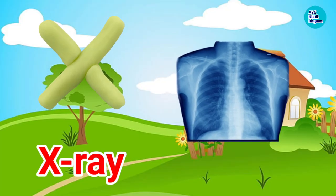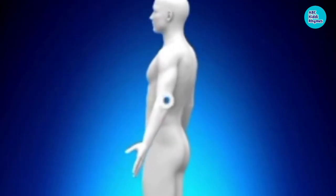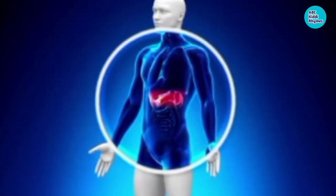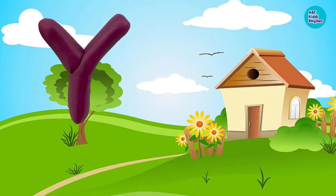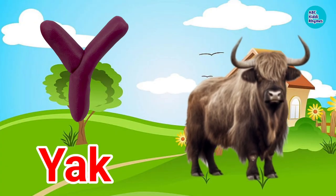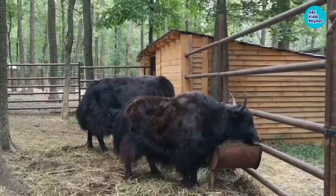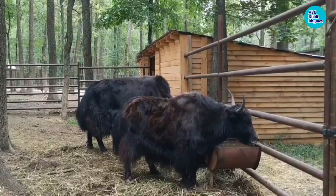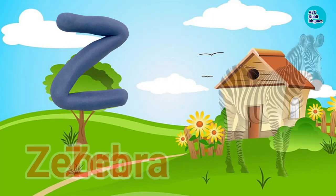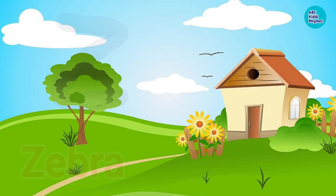X. X for X-ray. X-ray means X-ray. Y. Y for Yak. Yak means Pahari Sand. Z. Z for Zebra. Zebra means Chitthidhar Ghoda.